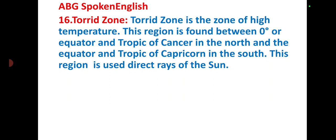Torrid zone: Torrid zone is zone of high temperature. This region is found between 0 degree of equator and Tropic of Cancer in the north, and the equator and Tropic of Capricorn in the south. This region receives direct rays of the sun.